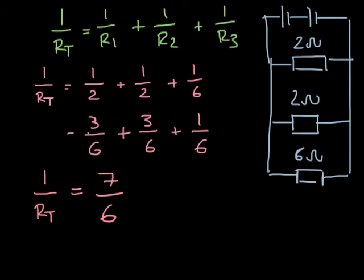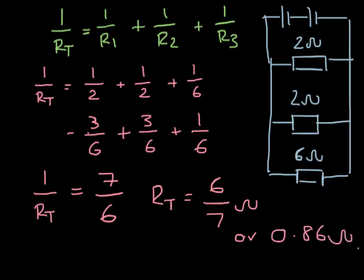So if 1 over RT is equal to 7 over 6, RT must be equal to 6 over 7 ohms or 0.86 ohms if you do it on the calculator.